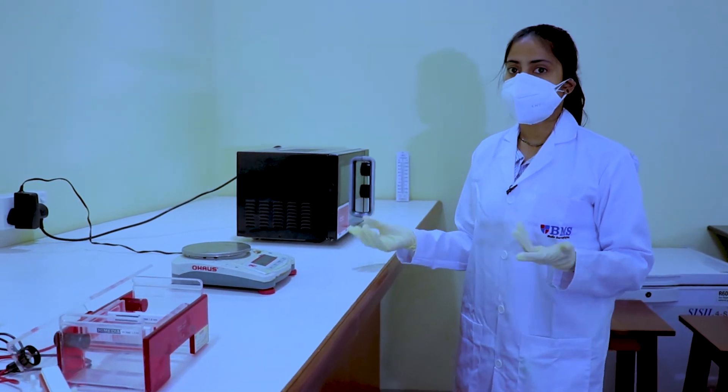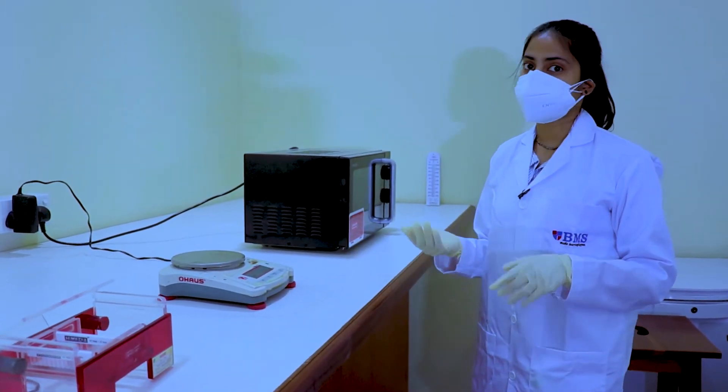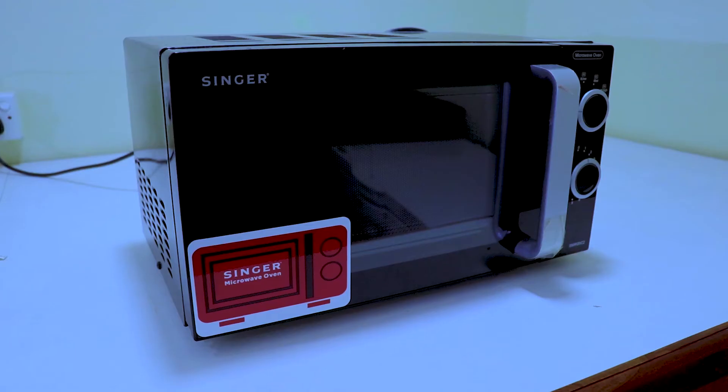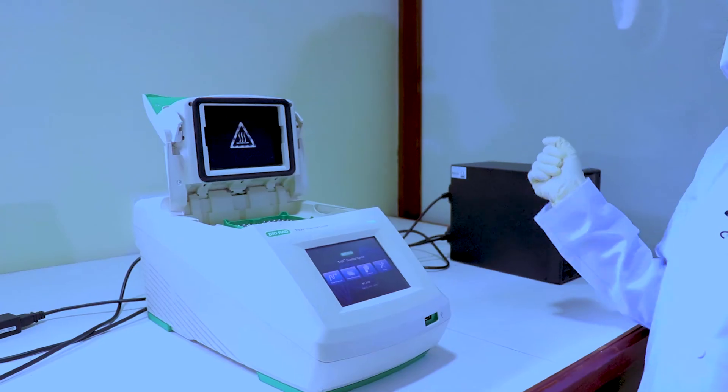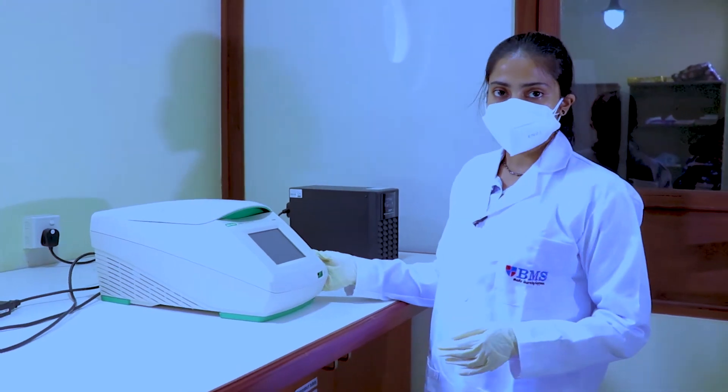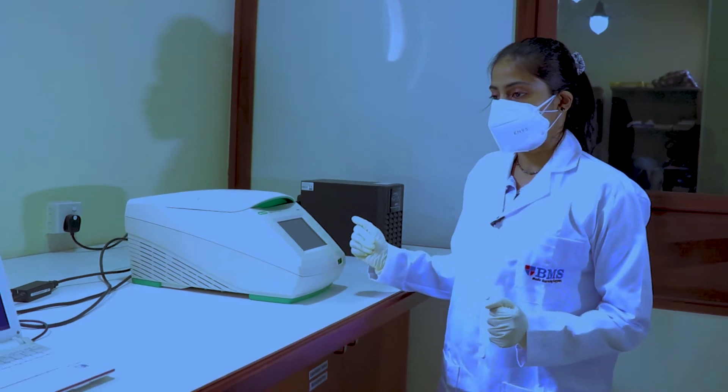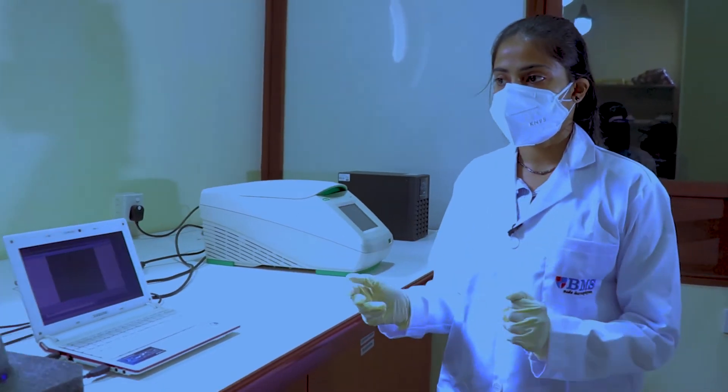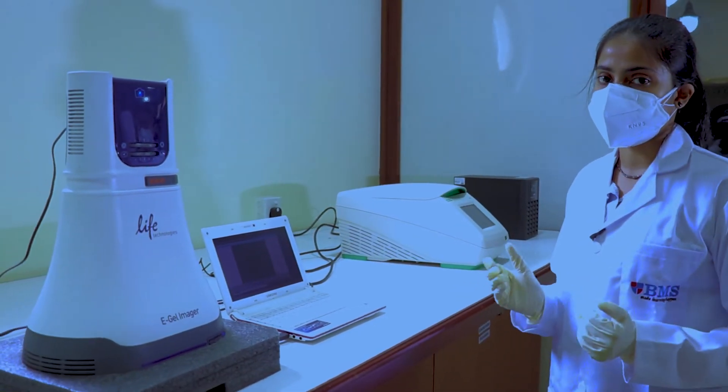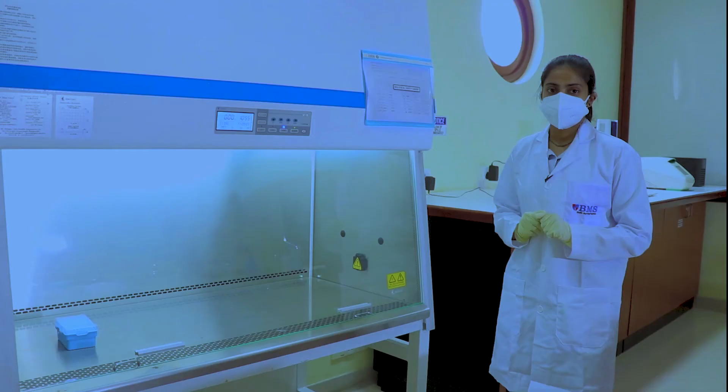This is a weighing balance which is used to weigh agarose powder for preparation of gel. We also have a microwave. This is the thermal cycler, the PCR machine, and here we have the gel imager which we use to visualize the agarose.